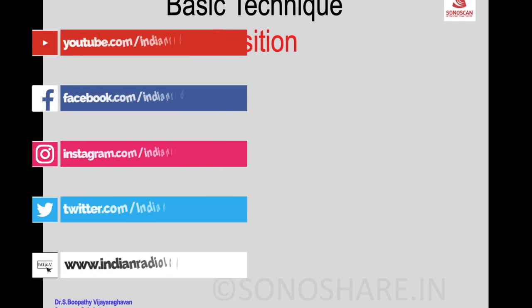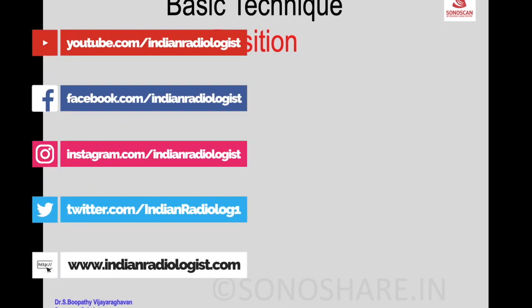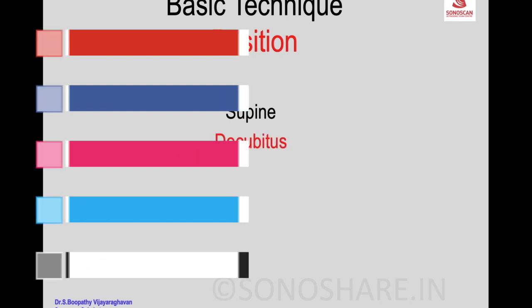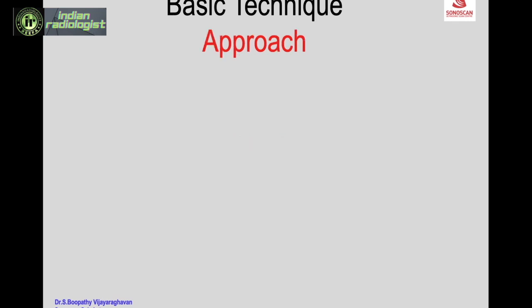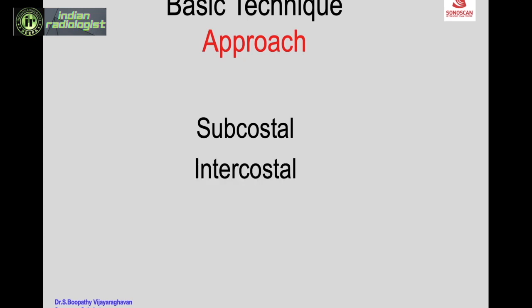Basic technique for renal ultrasound: the position of the patient can be supine, decubitus, prone — whichever position allows optimal visualization has to be used. Sometimes to see one kidney, more than one position may be necessary. The approach can be a subcostal approach or an intercostal approach, usually done with a deep suspended inspiration to bring the kidney below the ribs.